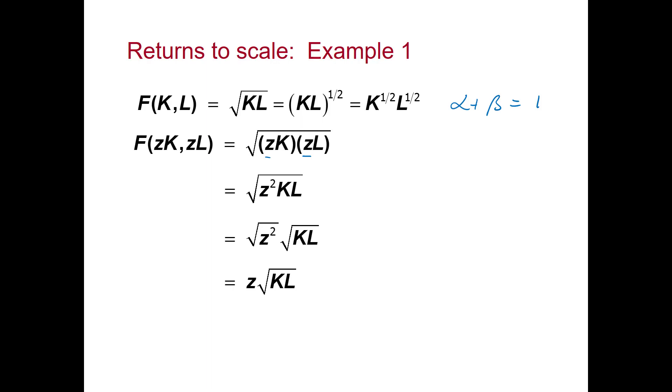So in this case, we see that when we increase both K and L by a factor of Z, the production function also increases by a factor of Z. The square root of KL is just our original production function, and we've increased it by Z.